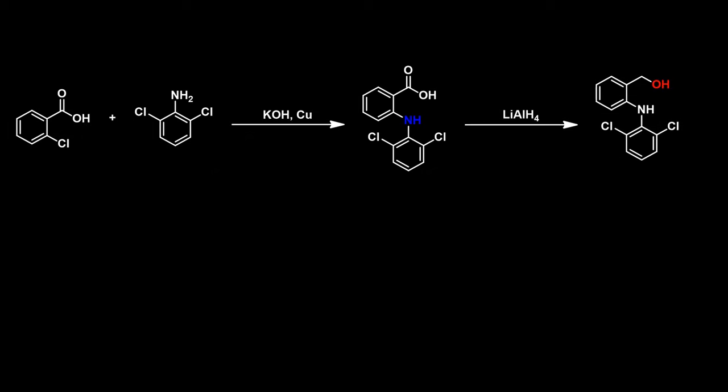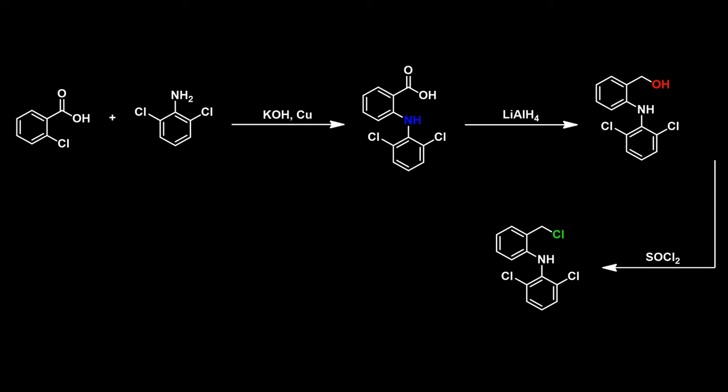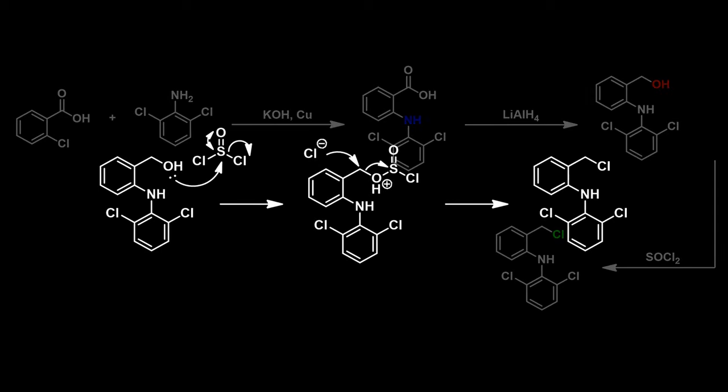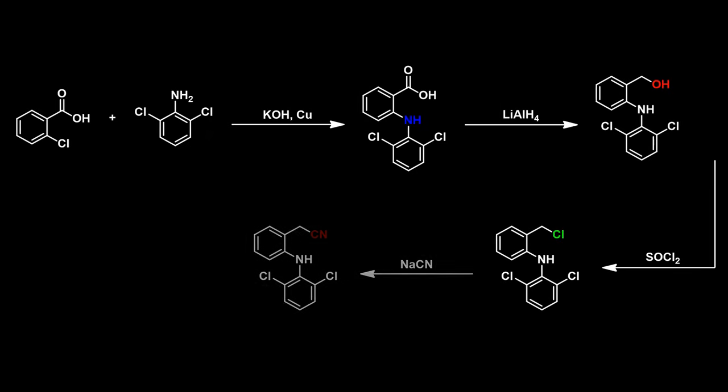This alcohol group can then be substituted with a chloride group in a reaction with phenyl chloride. The alcohol first attacks the sulfoxide group, leading to the elimination of a chloride ion. This turns the alcohol into a good leaving group, which can be displaced by the chloride ion. The chloride group is then replaced by a nitrile group using sodium cyanide in an SN2 reaction.